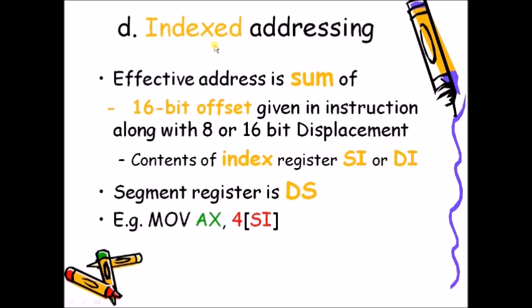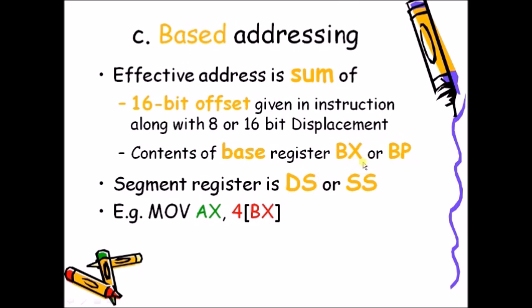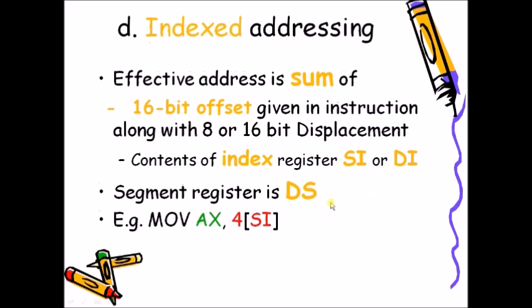Index addressing mode differs from based addressing mode only in that we must use the index registers SI or DI instead of base registers. Because only SI or DI are used, we cannot use the stack segment — the segment register must be DS. The value in SI is added with the displacement to give a resultant address, and the content at that address is copied into the destination register.